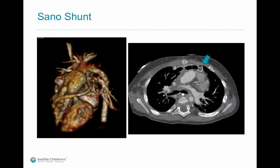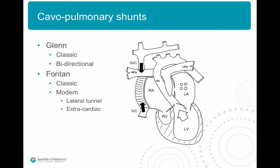Another example of a Sano shunt in a patient with aortic atresia and single ventricle. The image on the right shows thrombosis in a Sano shunt after placement of a Glenn shunt in this patient with hypoplastic left heart syndrome.